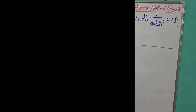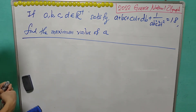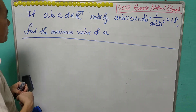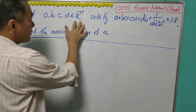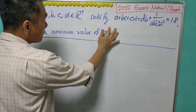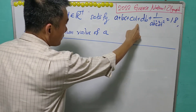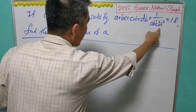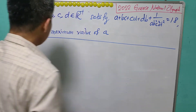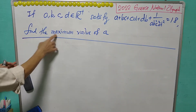This is the second half of today's discussion. This question comes from the 2022 National Olympiad. If A, B, C, D are positive real numbers satisfying 5A plus B plus C plus D plus B plus 1 over A B squared C squared D squared equals 18, we are asked to find the maximum value of A.